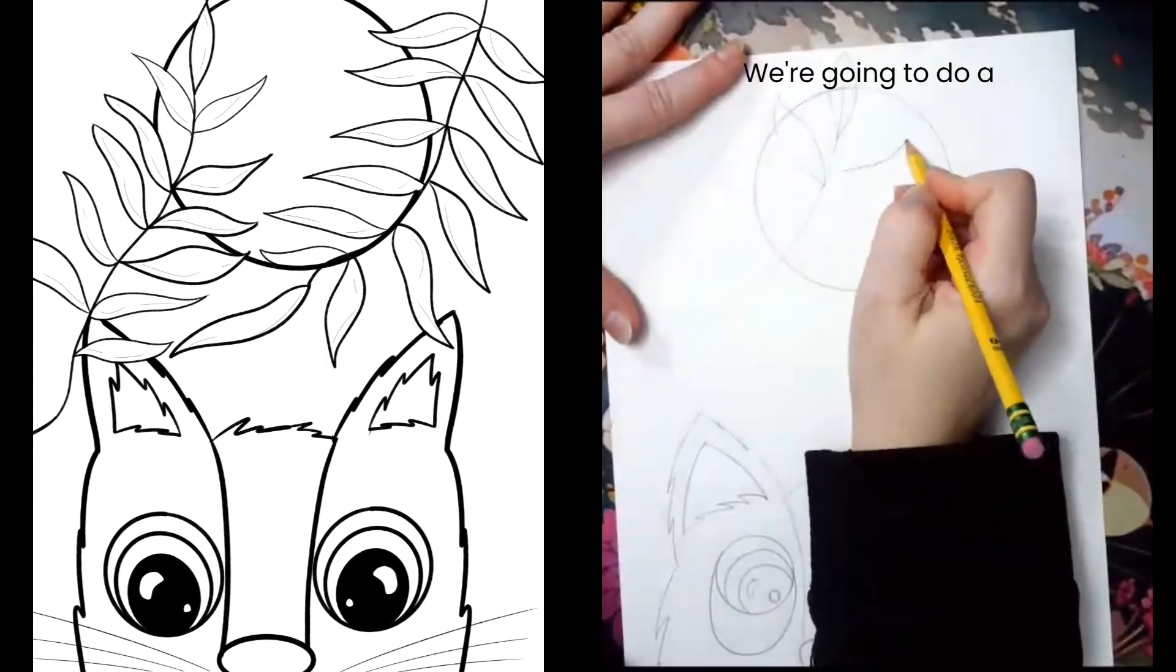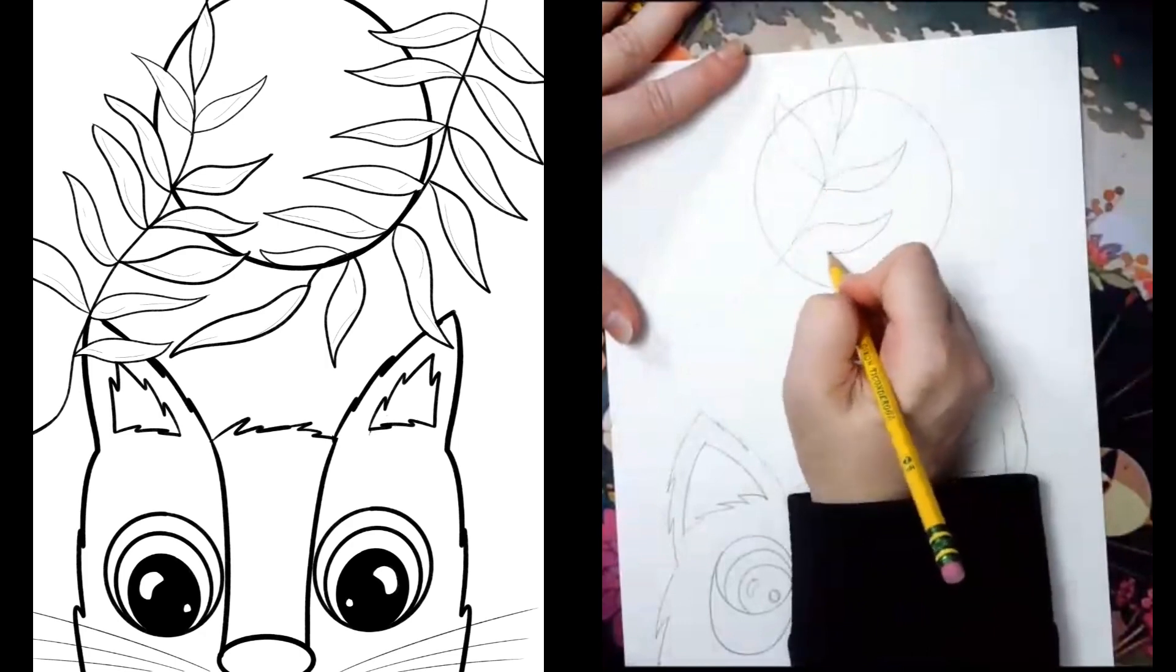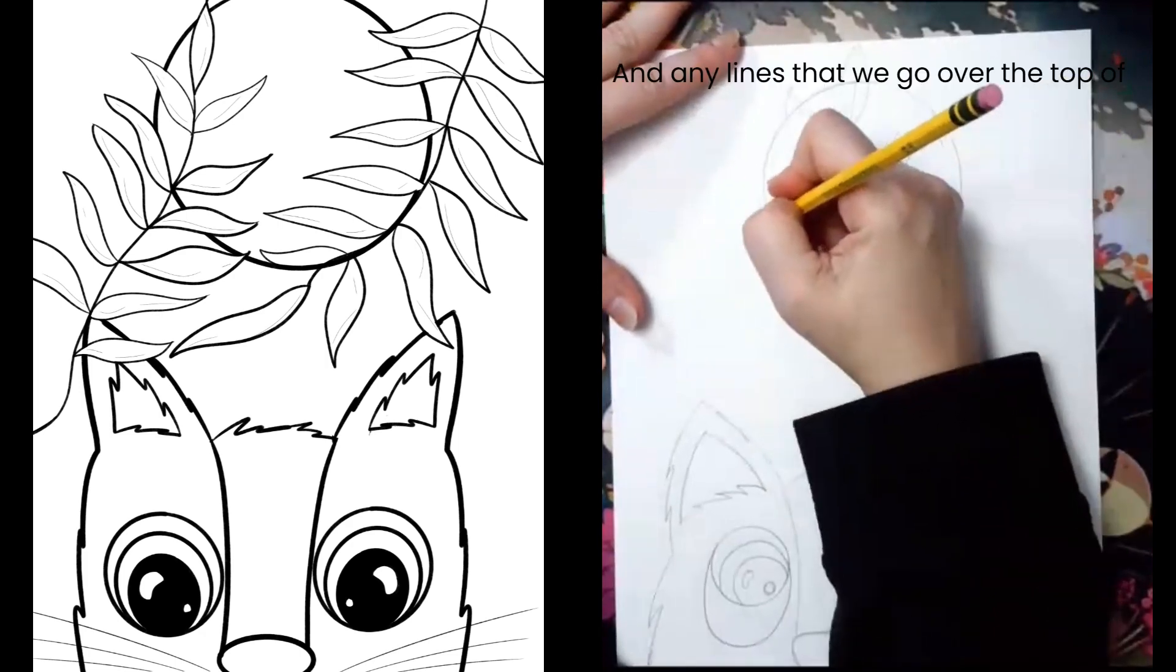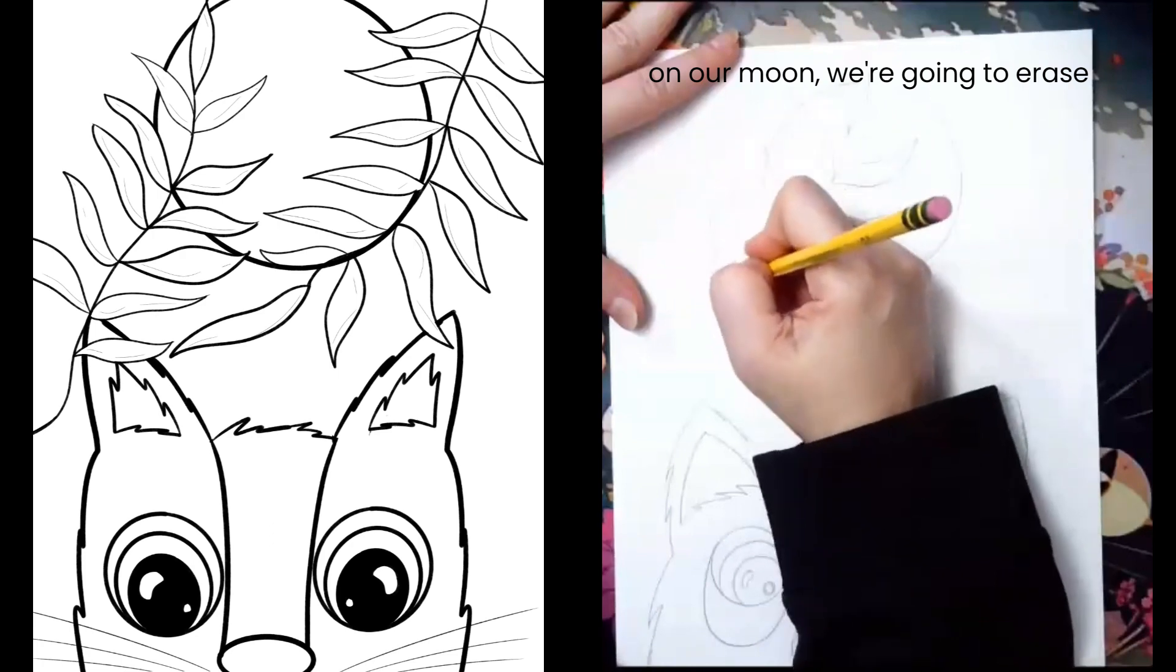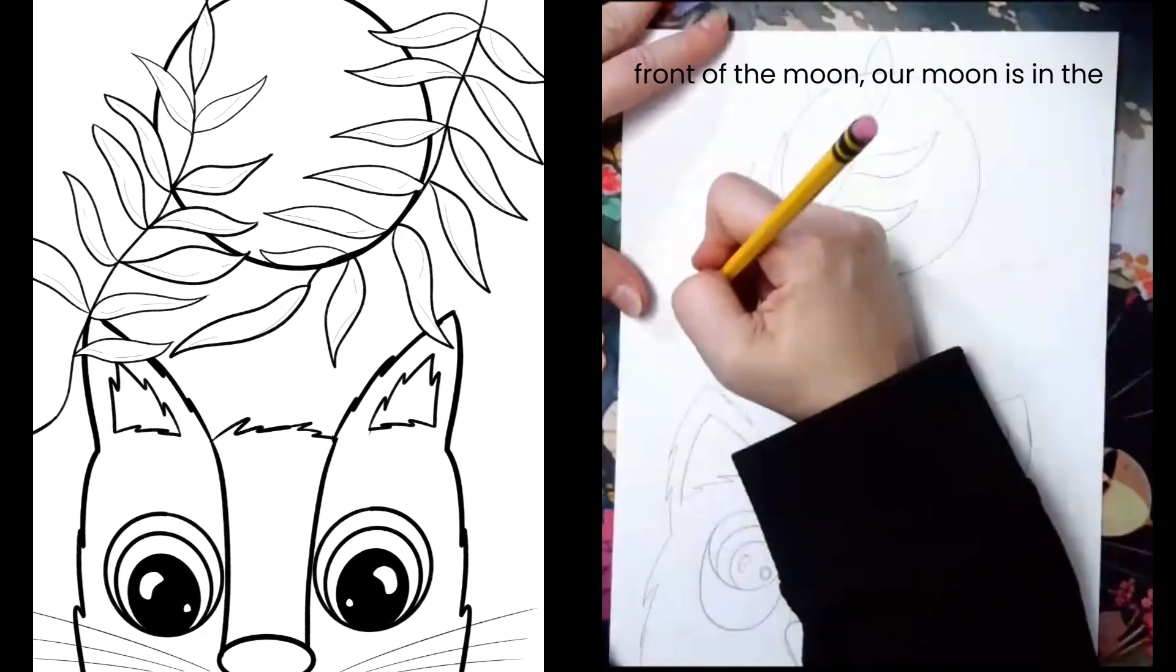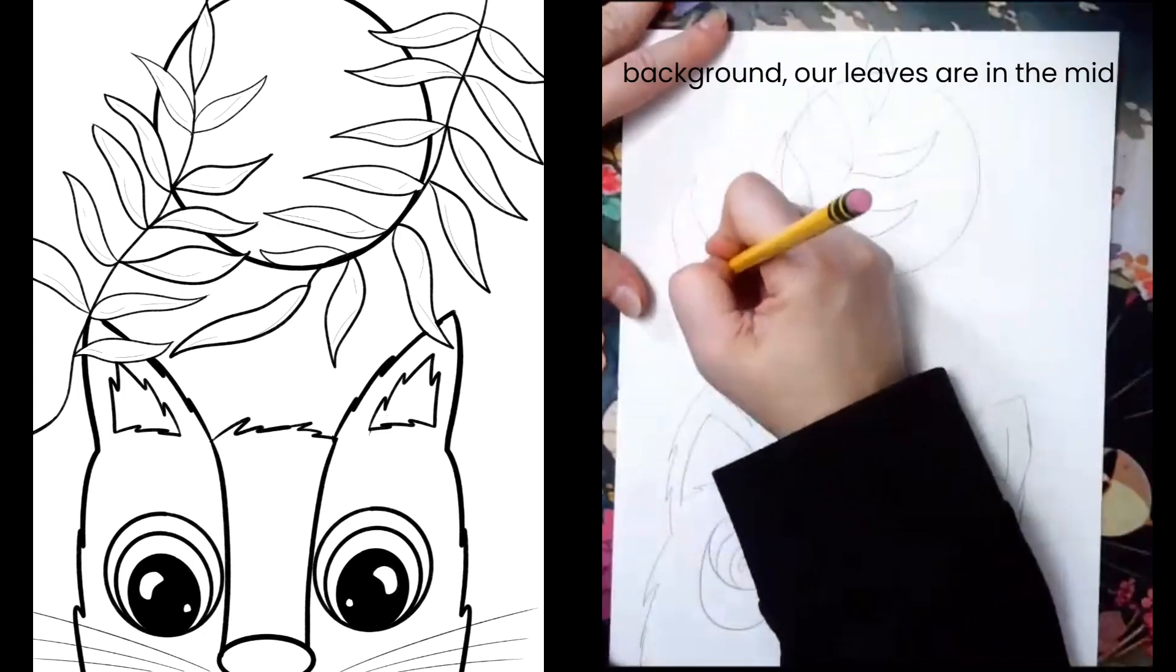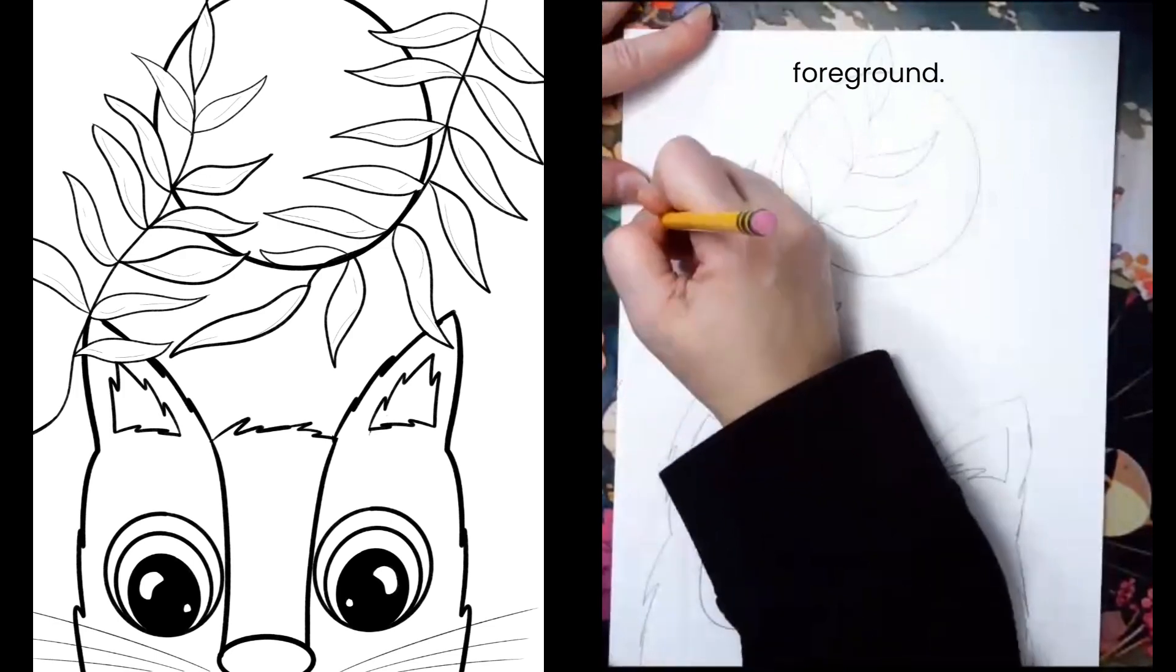We're going to do a curve. And any lines that we go over the top of on our moon, we're going to erase the moon line because our leaves are in front of the moon. Our moon is in the background, our leaves are in the mid ground, and our cat is in the foreground.